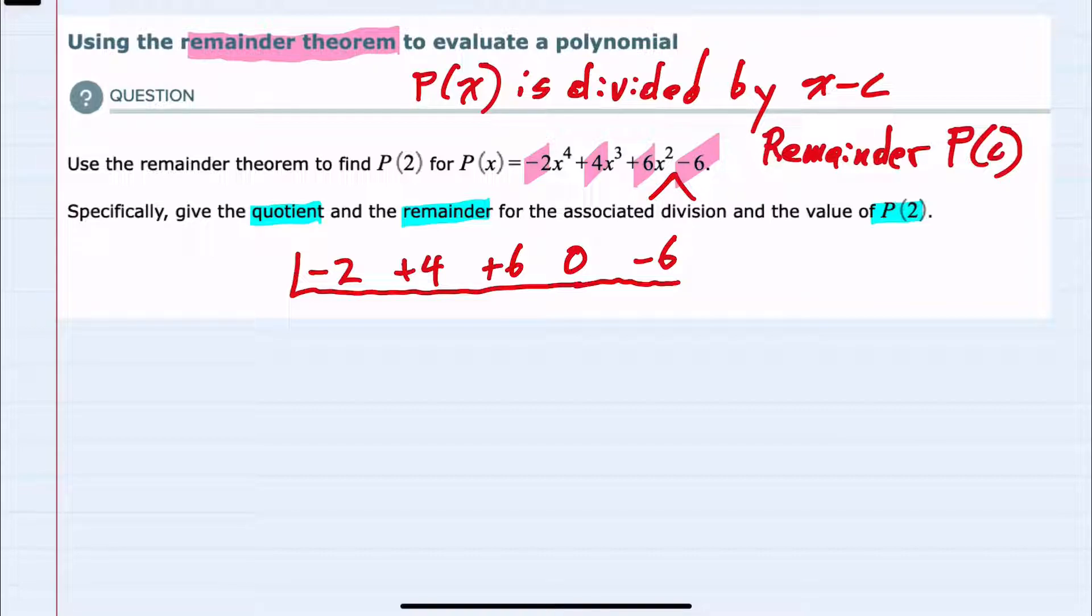Outside since we're looking for p of 2 I would just put a 2. And to start synthetic division I would bring down the first coefficient, negative 2.